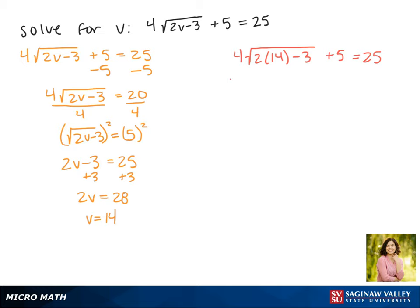So now we get 4 times the square root of 28 minus 3 plus 5 equals 25. That 28 minus 3 gives us a 25 under the square root. And we get 4 times 5 plus 5 equals 25.